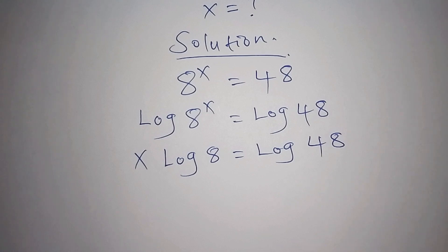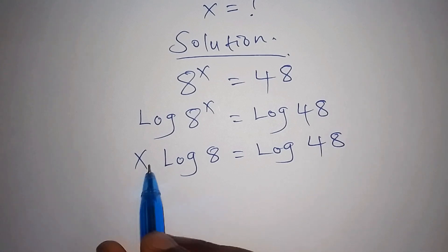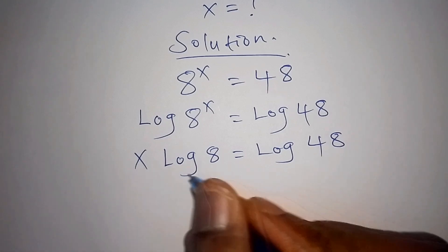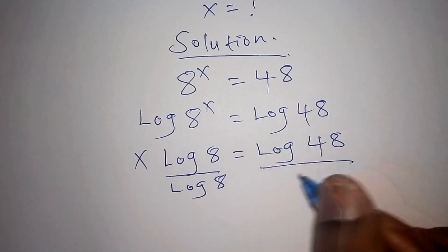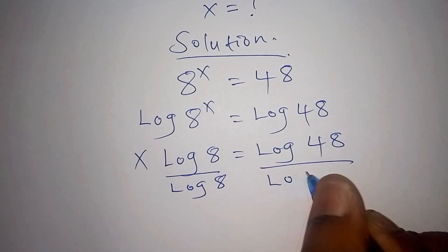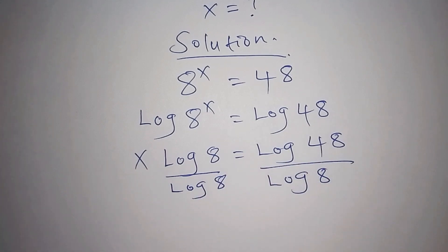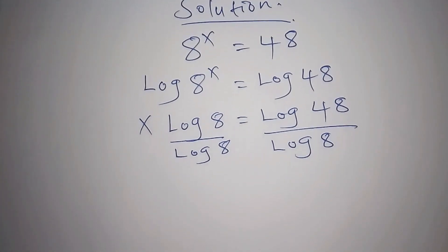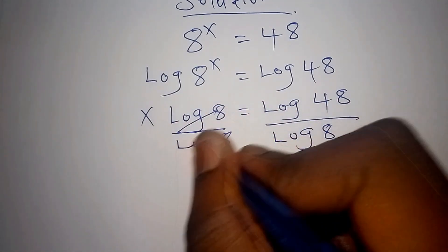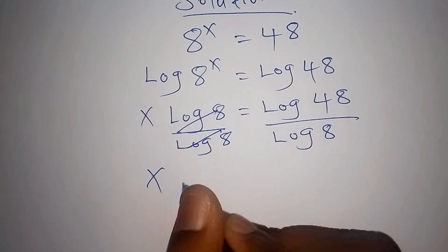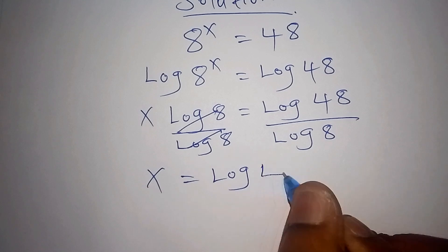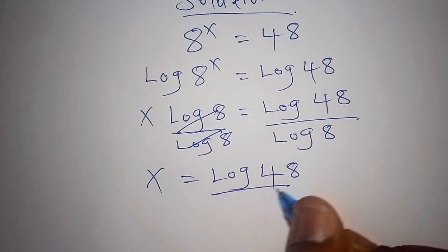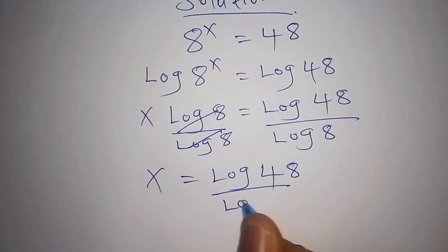From there, we can find the value of x. We shall divide both sides by log 8 — this side and also this side by log 8. The log 8 and log 8 shall cancel, so our x is equal to the log of 48 all over the log of 8.